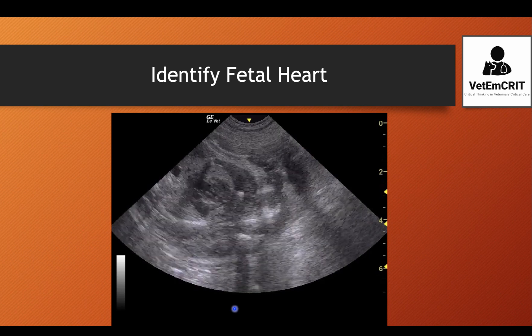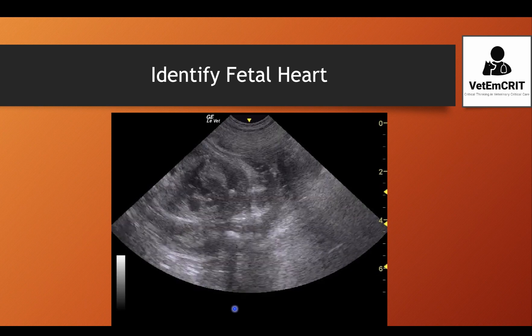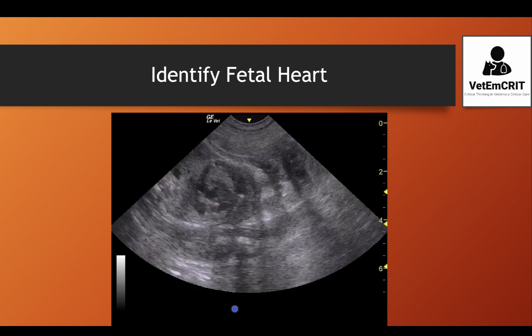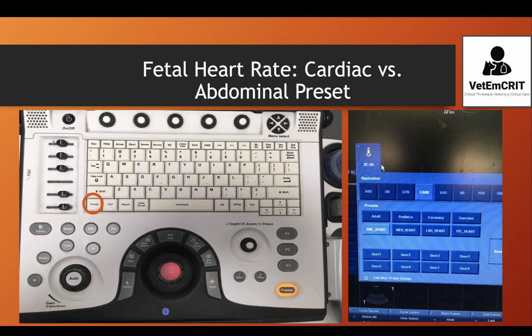Therefore, the most accurate way would be to use M-mode, which I'm going to teach you during this video. I will use the Logic E point-of-care ultrasound machine. In your practice you may have a different machine, but the majority of modern machines will have different presets that will allow you to get the fetal heart rate by using M-mode.